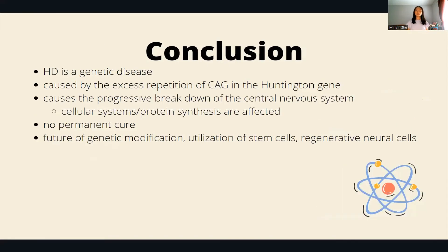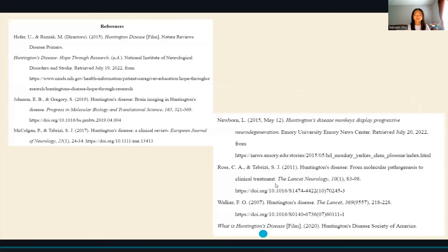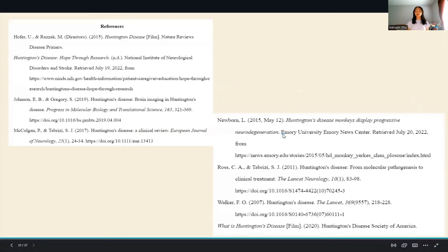In this presentation we've learned that Huntington's is a genetic disease caused by excess repetition of glutamine in the Huntington gene, which causes nerve and brain cells to break down. Although there is currently no permanent cure, if one is developed it represents a bright future for genetic modification in humans as well as the utilization of stem cells to regenerate nerve cells. Here are my sources — I hope you learned something about Huntington's, and thank you for listening!